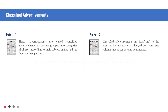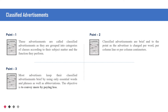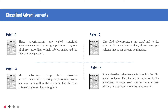Classified advertisements are brief and to the point as the advertiser is charged per word, per column line, or per column centimetres. Most advertisers keep their classified advertisements brief by using only essential words, phrases and abbreviations. The objective is to convey more by paying less. Some classified advertisements have a post box number added to preserve the advertiser's identity at some extra cost.